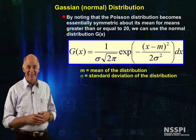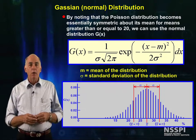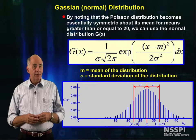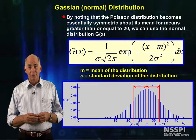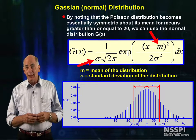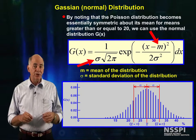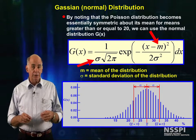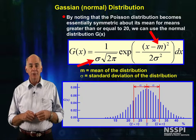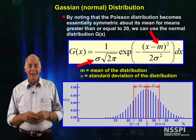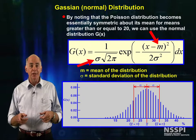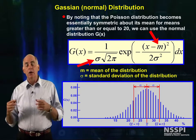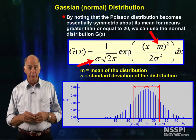The normal distribution is given by the hideous formula you see here, where m is the mean of the distribution and sigma is the standard deviation. Note that the mean and the standard deviation can be arbitrarily set for Gaussians, rather than being an intrinsic property as they are for the Poisson. We cheat and set the standard deviation of the Gaussian to the square root of the mean, as if it were a Poisson, and then use all the mathematical apparatus for the Gaussian.